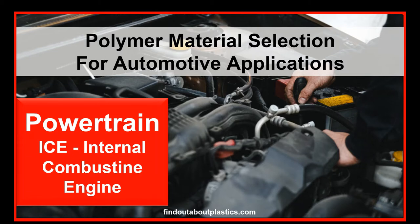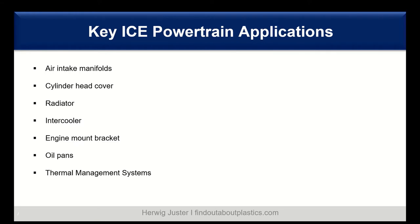Let us get started with an overview of the different applications. Today we discuss seven powertrain applications in the internal combustion engine: starting with air intake manifolds, we will have a look at the cylinder head cover, the radiators, the intercoolers, engine mount brackets, oil pans, and closing with the thermal management system.